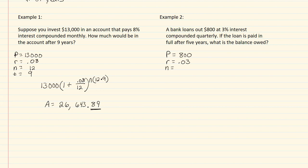Compounded quarterly is going to be four times a year. Think about this, we have four quarters in a year. And our t will be five years.